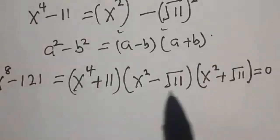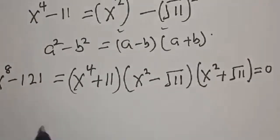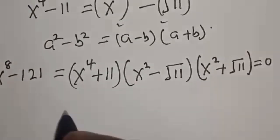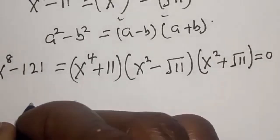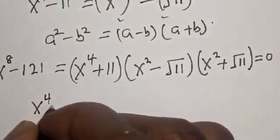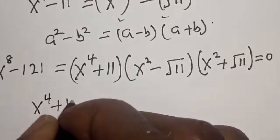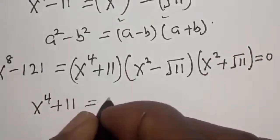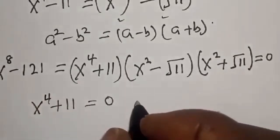From here we have three cases. Case one: s raised to power 4 plus 11 is equal to 0.